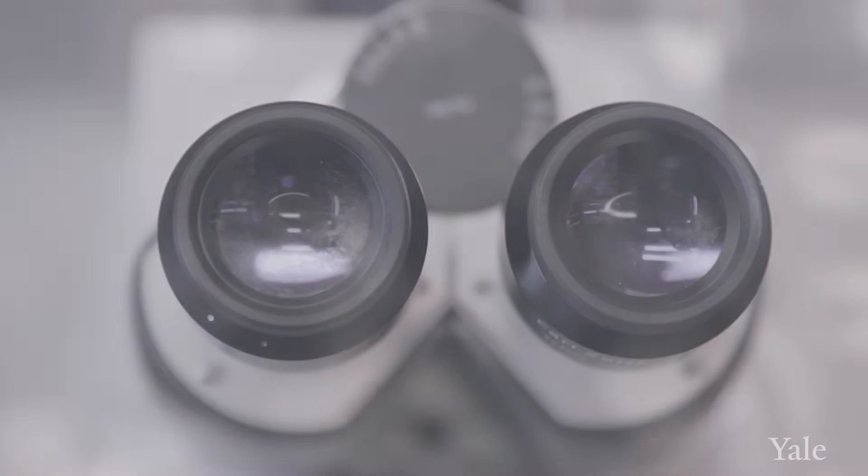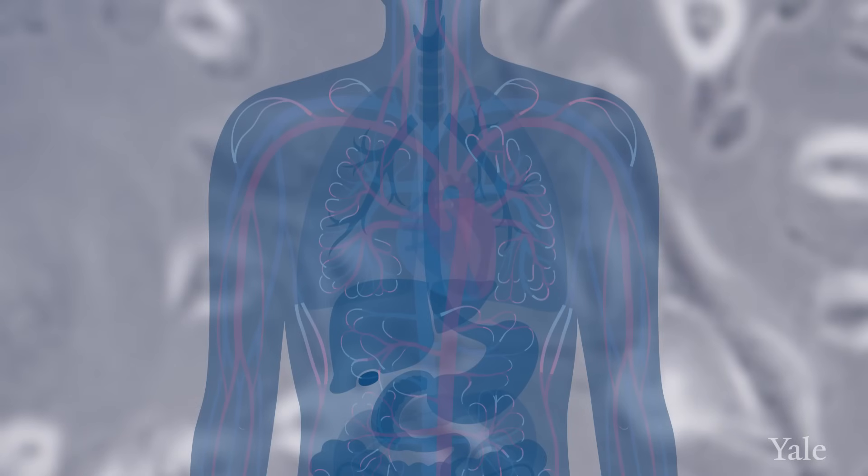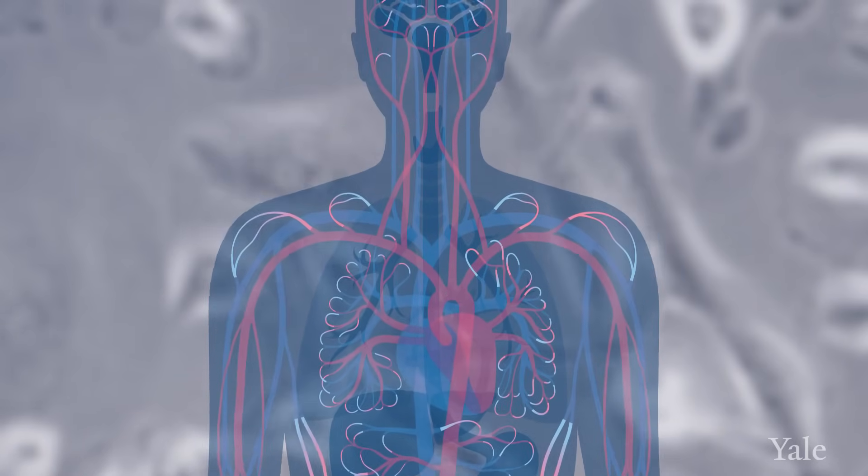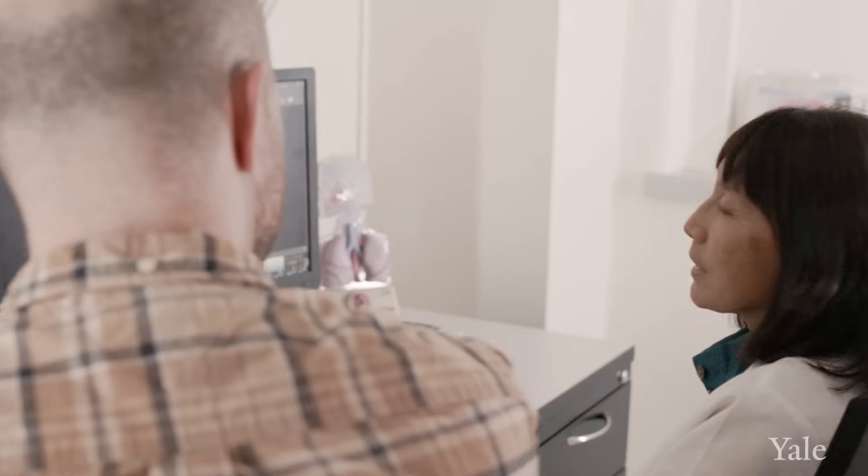Lung cancer does tend to spread to areas with high blood flow. And unfortunately, that's the brain, the liver, the bone. We often see brain metastases in lung cancer. In the advanced setting, perhaps in 20% to 25% or more of the patients.